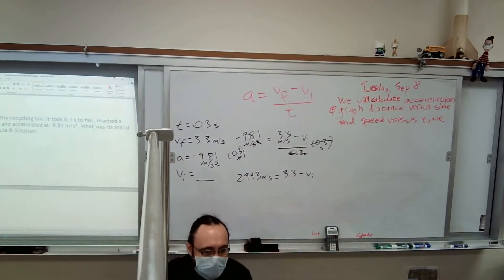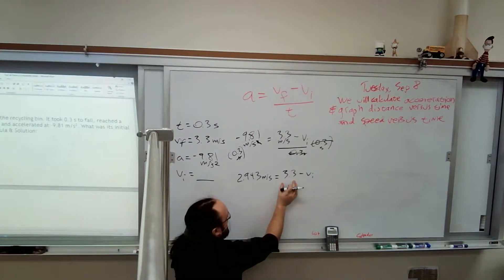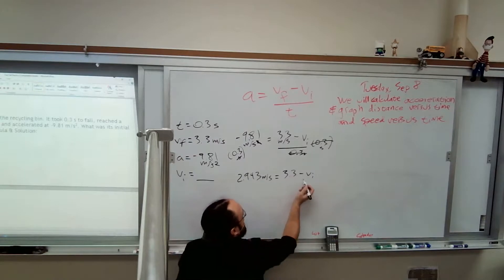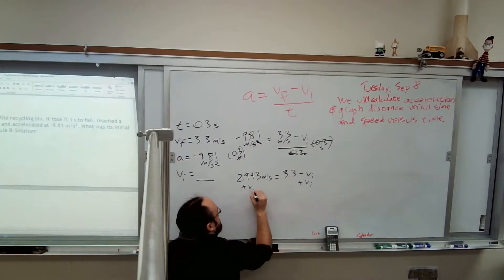We still got to get Vi by itself. And I chose this question because I haven't done algebra with addition and subtraction yet. We need to make this 3.3 cancel. But what's going to be easier to me is to move this Vi over here. And then I don't have a negative Vi after I make that cancel. So Vi for initial velocity. It says minus Vi. So to move it over, I'm going to do the opposite and say plus Vi.